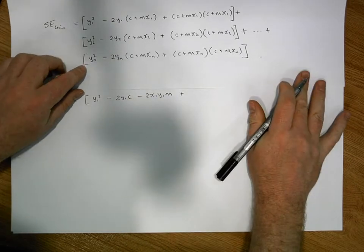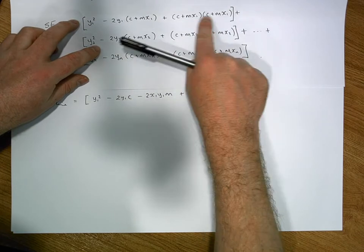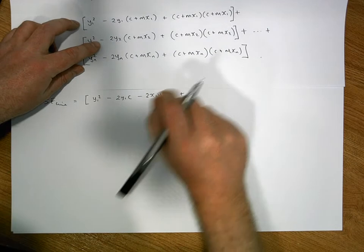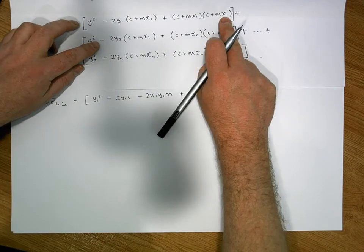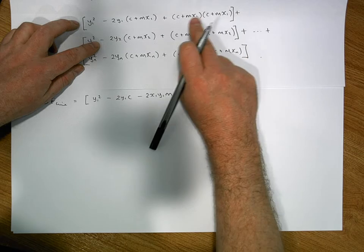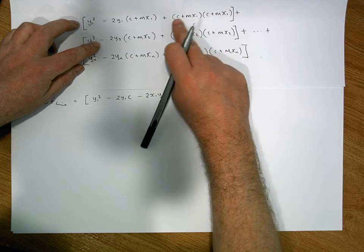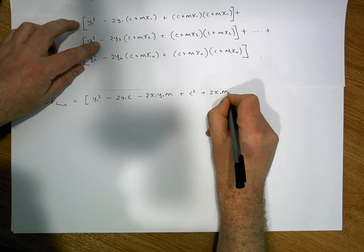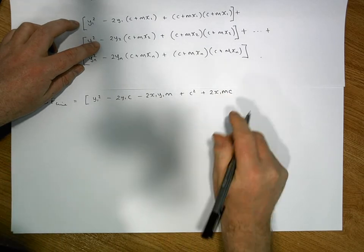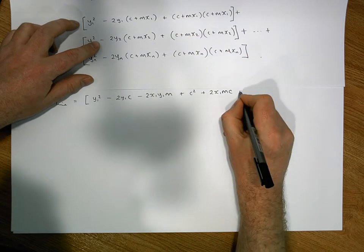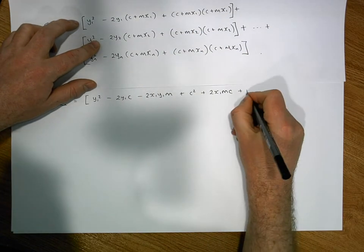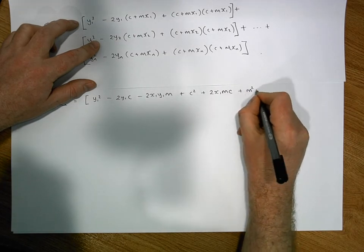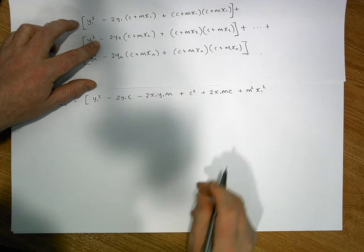Next, c times c gives us c squared. Then c times mx1 — grouping the observation — gives c times mx1, and we have another mx1 times c, so two of them, giving plus 2x1mc. Then mx1 times mx1 gives us plus m squared x1 squared. So that's this term here done.